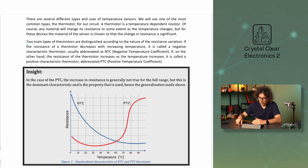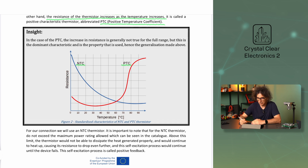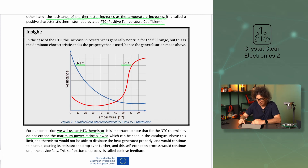Two main types of thermistors are distinguished according to the nature of the resistance variation. If the resistance of a thermistor decreases with increasing temperature, it is called a negative characteristic thermistor, usually abbreviated as NTC — negative temperature coefficient. If, on the other hand, the resistance increases as temperature increases, it is called a positive characteristic thermistor, or PTC — positive temperature coefficient. For our circuit, we will use an NTC thermistor. It's important that the NTC thermistor does not exceed the maximum power rating shown in the catalog, because above this limit the thermistor cannot dissipate the heat properly, its resistance drops further, and this self-excitation process — called positive feedback — continues until the device fails.